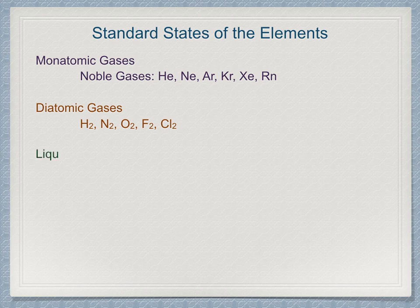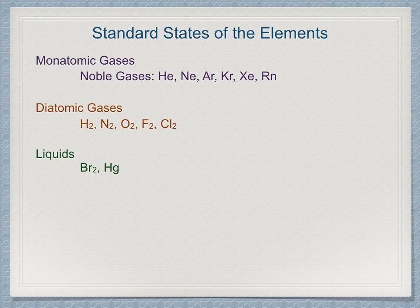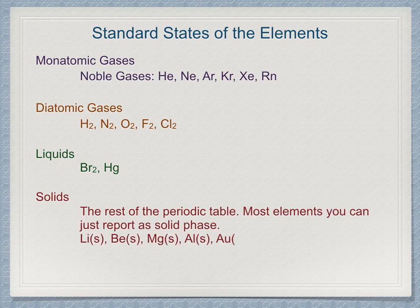For liquids, there are only two liquid elements at 298.15 Kelvin: bromine and mercury. Note that bromine is a liquid and it is also diatomic. Everything else in the periodic table is a solid, and we can list their states such as lithium solid, beryllium solid, gold solid, and so forth.